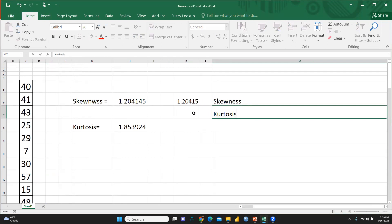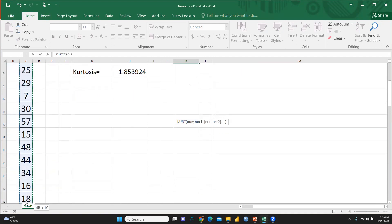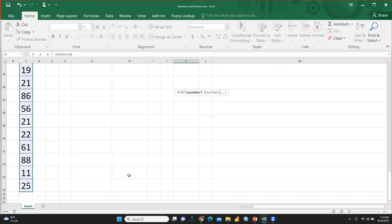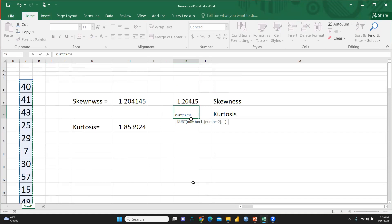Kurtosis. So how we can calculate kurtosis, equal sign and simply you have to press KURT, K-U-R-T, K-U-R-T, simply select this and select this data set. I have selected this data set and now I would close the bracket, press enter.